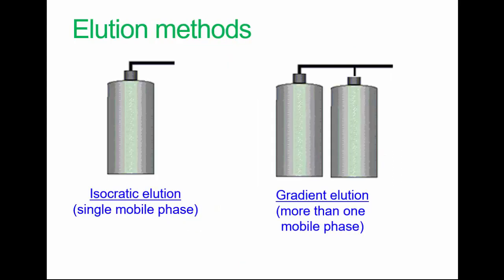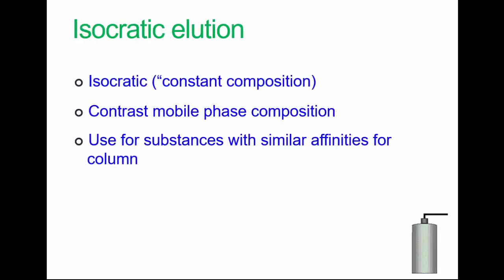HPLC systems these days are computer controlled and it's possible to mix different mobile phases during the process. This is typically done to separate components with different polarities. This process is referred to as gradient elution. If you only use one mobile phase, it's called isocratic elution.